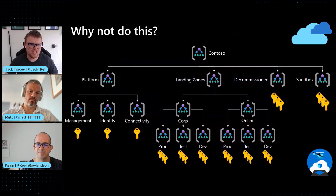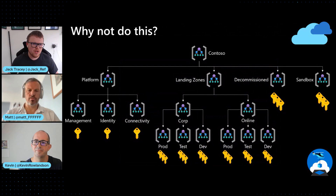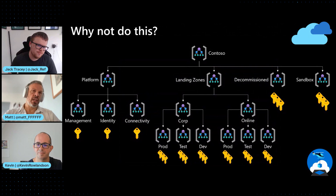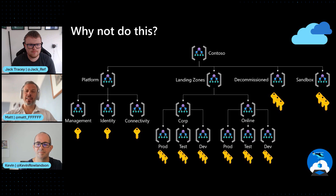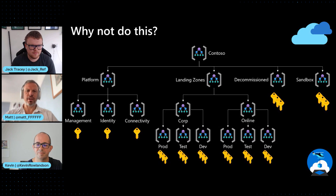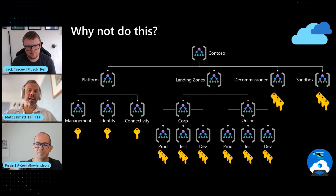For a bit of a summary and wrap-up: it's important to consider management groups as units of governance instead of units of organization or even of RBAC. Generally, doing RBAC at the subscription level can prevent the kind of management group sprawl that we sometimes see. And there are definitely some anti-patterns as well that we should come on to.